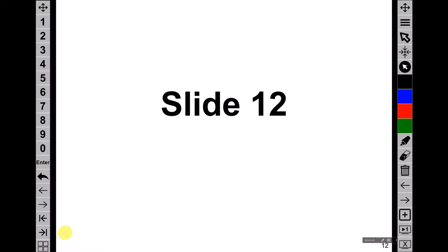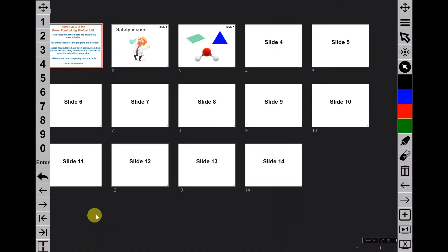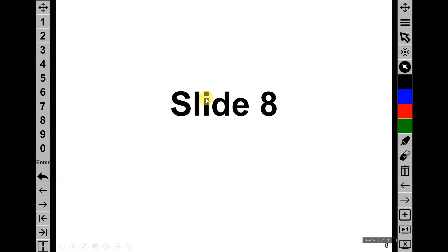A pretty neat button that's available in this program is a button that allows you to go back to the previously visited slide, so that you can alternate very quickly between two slides that are far apart in the slideshow. Another very efficient way to navigate between slides is to use the slide sorter button. When you hit that button, it's going to show all the slides that are available, and then you can just click on the slide to directly navigate to it.